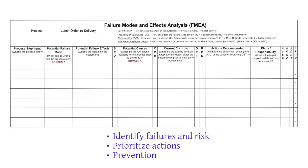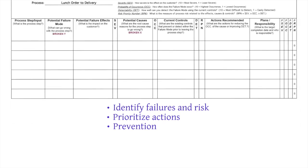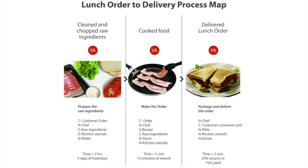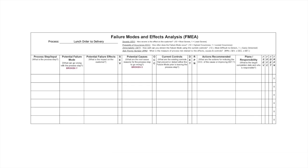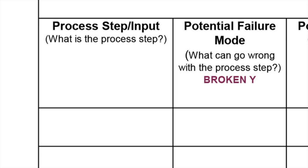You can complete an FMEA in 8 steps. The first step is to transfer all of the critical and controllable inputs from your process map into the first column of the FMEA form. You enter one process step and input for each row, then starting with the first row, you move across each of the columns until you reach the actions recommended column.